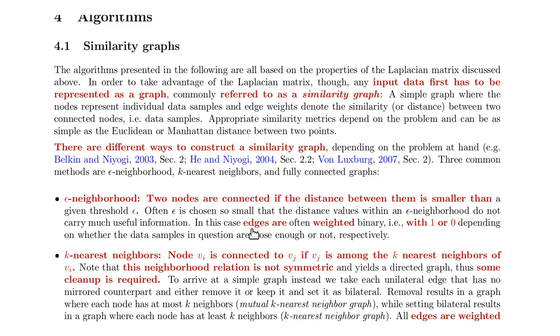You can still decide on the weights of the edges. Now we've decided which edges to introduce, and you could also weight them. But often in this case, the edges are just weighted with 1 or 0. 1 if they are within an epsilon-neighborhood, and 0 if they are not.